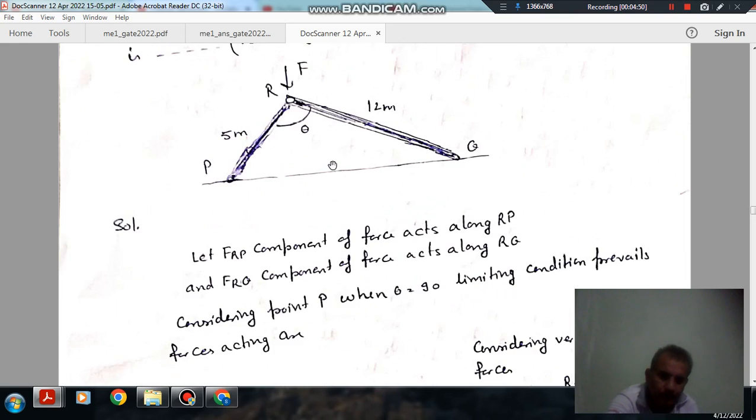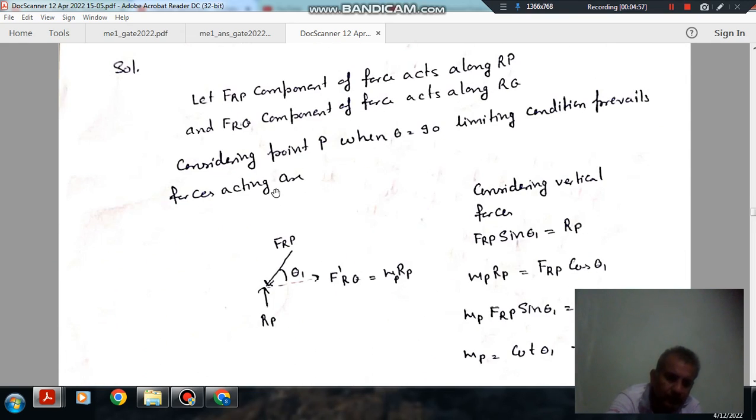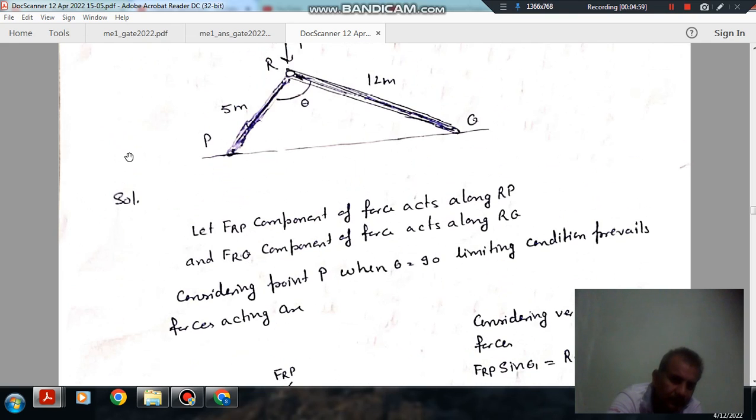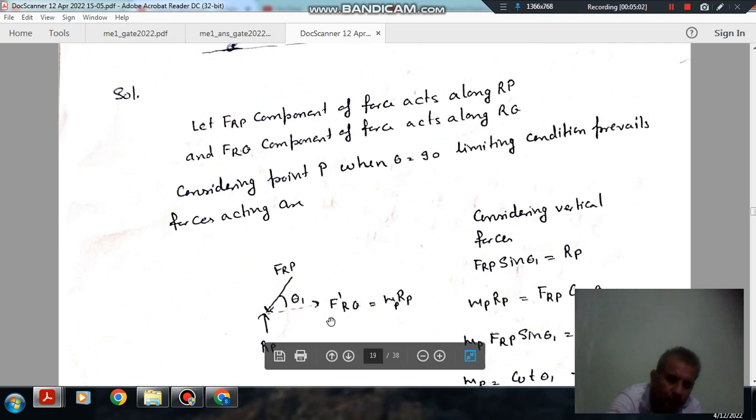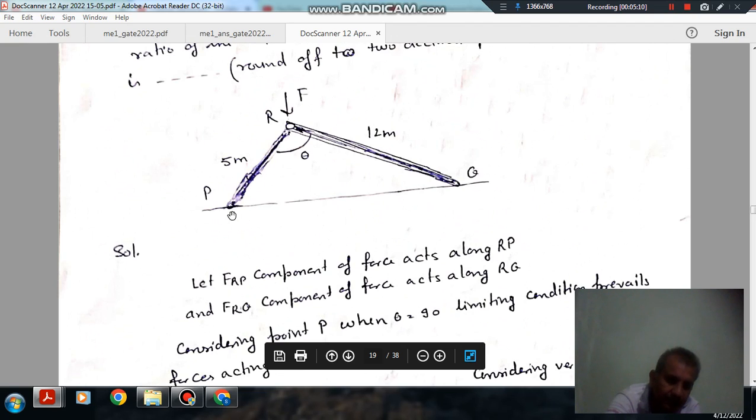When theta is 90 degrees, then it starts slipping and the force of friction will act in this direction, and the force of friction will act in this direction. So force of friction is F_RP, or it is equal to mu_P times R_P, and that is the reaction. R_P is the reaction.